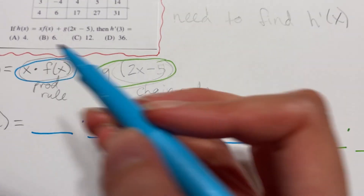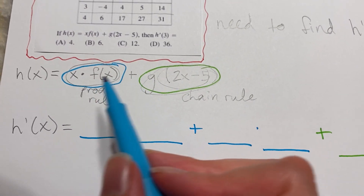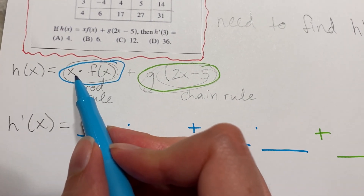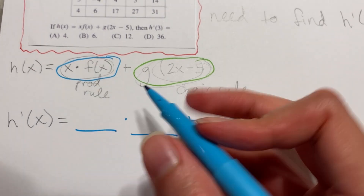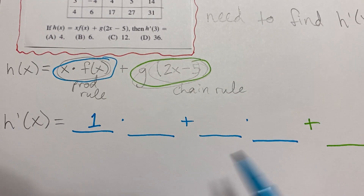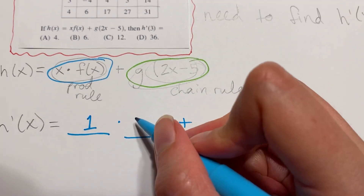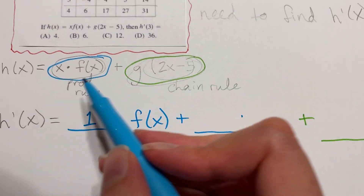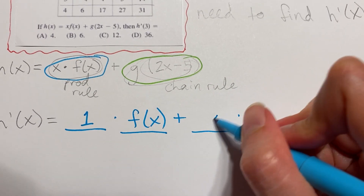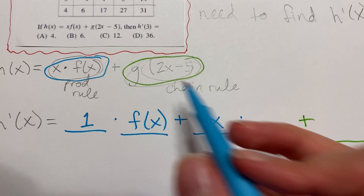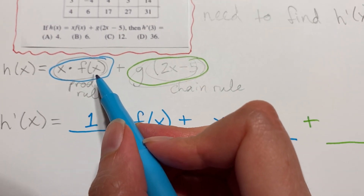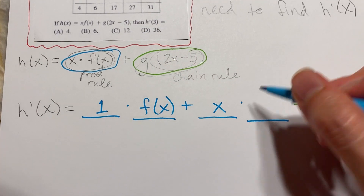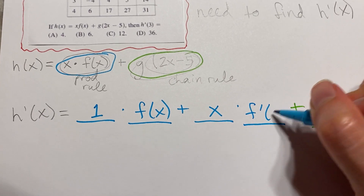For the product rule: in the first slot you take the derivative of the first piece — the derivative of x is 1. Then you write the second piece unchanged, which is f(x). In the third slot you write the first piece unchanged, which is x. In the last slot you write the derivative of the second piece — since we don't know anything about f(x), you just write it generically as f'(x).